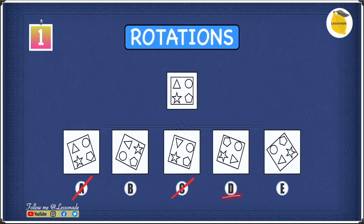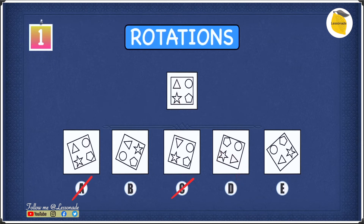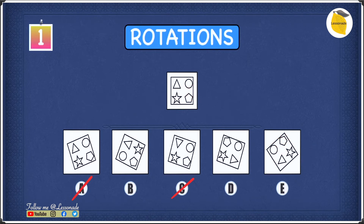In D, the pentagon is pointing towards the circle and the triangle is pointing away from the star — just like in the question figure. So D is also fine. In E, the triangle is pointing away from the star and the pentagon is pointing towards the circle, just like in the question figure. So E is also fine. Out of the five options, we've crossed off A and C, leaving us with B, D, and E.